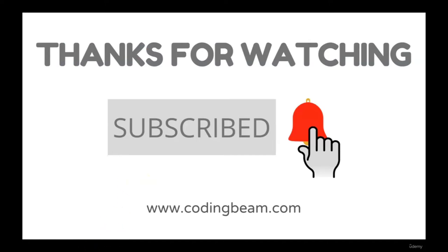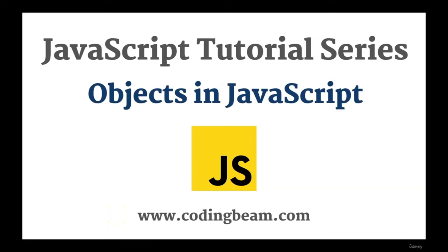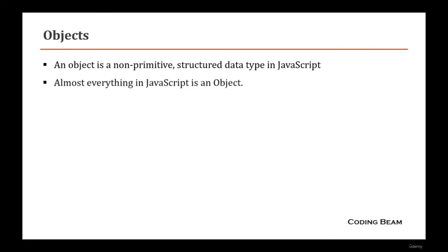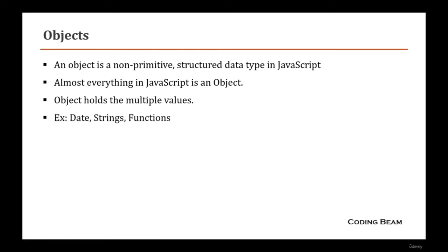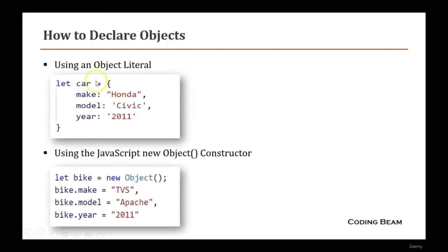In this video we are going to learn about objects in JavaScript. An object is a non-primitive or structural data type. Almost everything in JavaScript is considered an object because JavaScript is an object-based language. Objects can hold multiple values including properties and methods. Dates, strings, and functions are also considered objects.